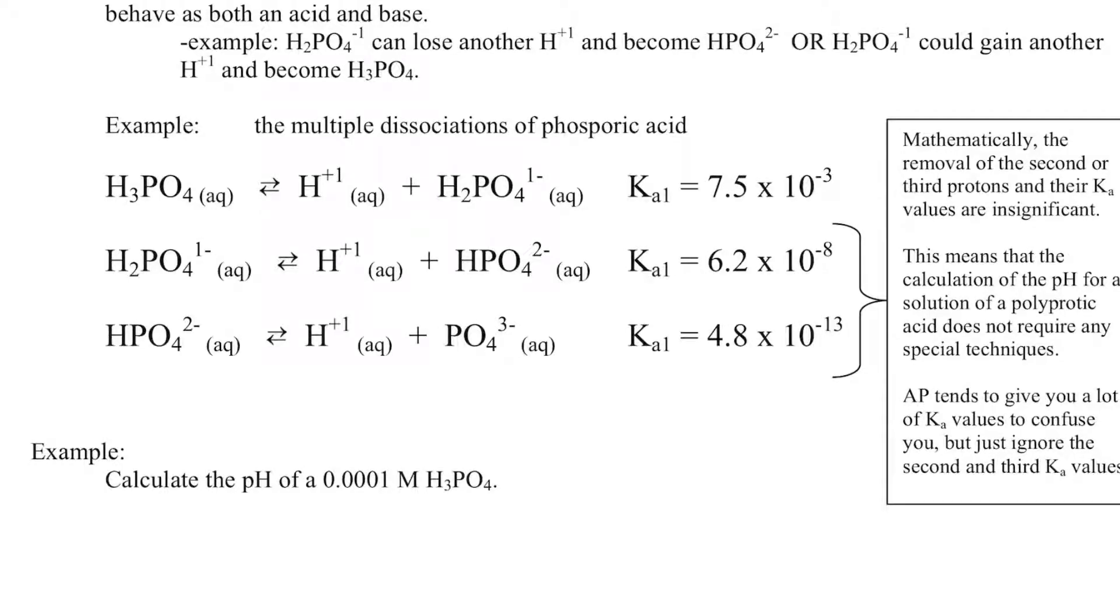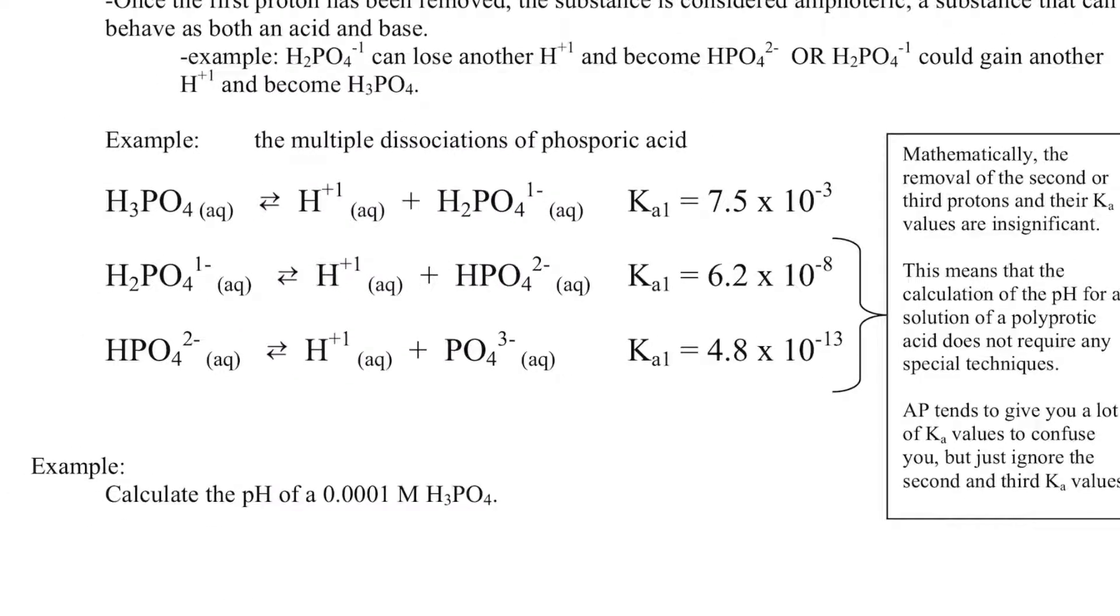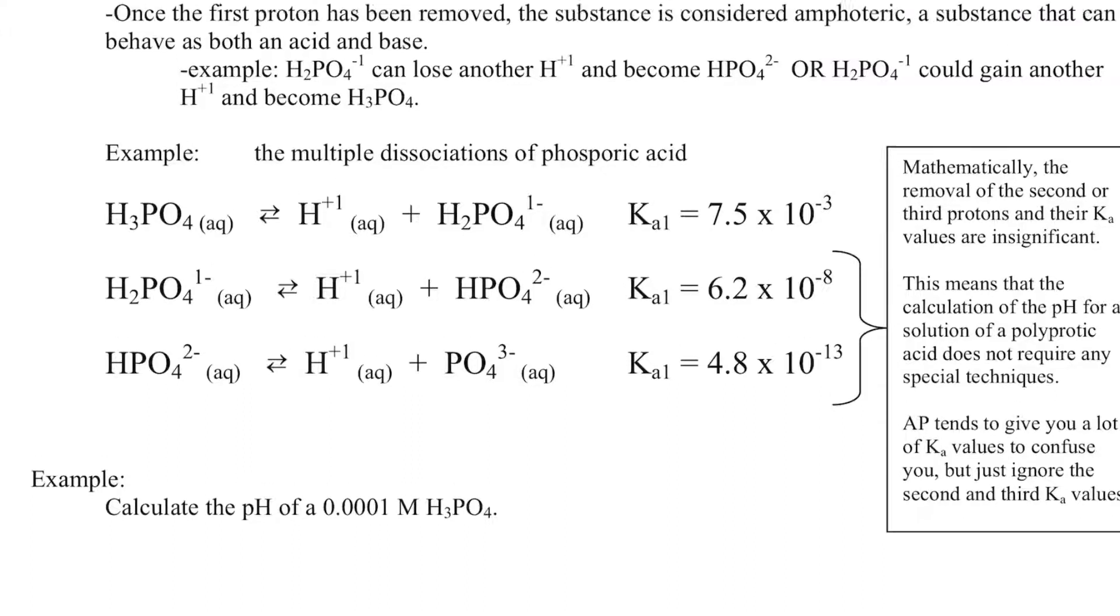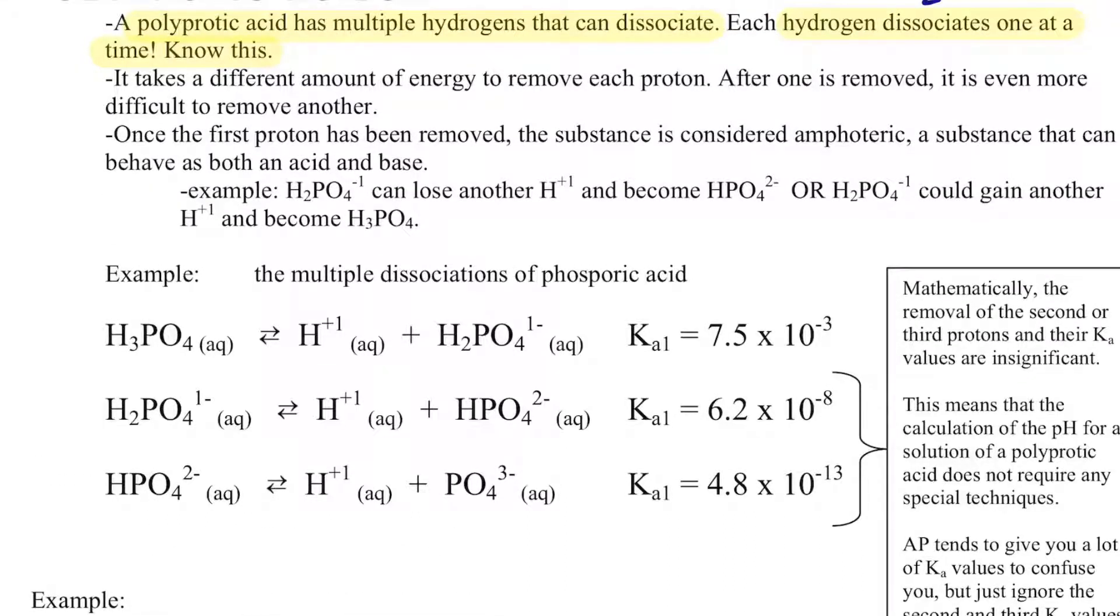So what we end up with is multiple Ka. For example, I have H3PO4 down here. And what you see is that based on the magnitude, it becomes increasingly more difficult for H's to be plucked off. And so after one is removed, it becomes even more difficult to remove another.